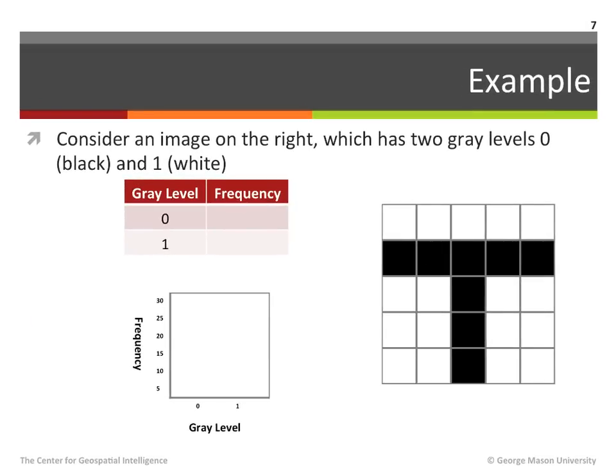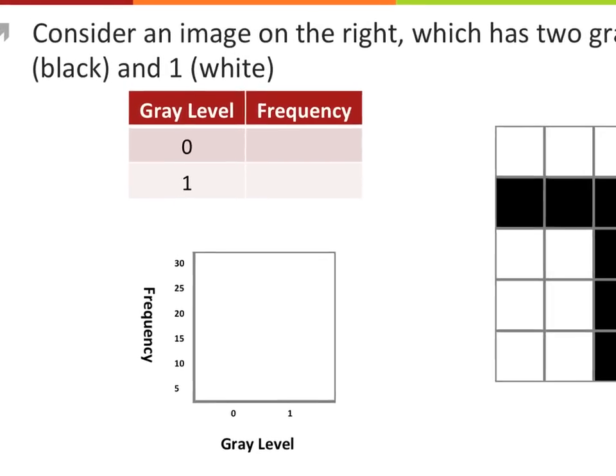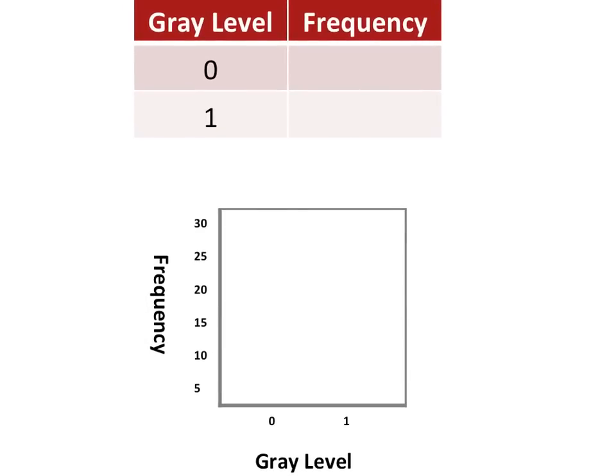To illustrate this, consider the image on the right. This image has five rows and five columns, and therefore has 25 pixels. In this image there are two gray levels: zero represented by black and one represented by white. To demonstrate how the image histogram is constructed and represented, we will organize our results in a table and a chart. The table has two columns, namely gray level and the corresponding frequency, while in the chart the x-axis represents the gray level and the y-axis represents the frequency.